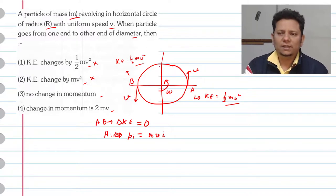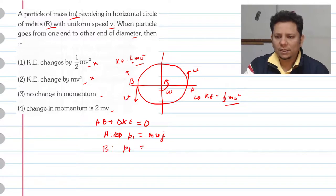We take two opposite ends of diameter in this direction, so it becomes mv j cap. This is the initial momentum. At point B, the final momentum value will be mv multiplied by minus j cap.